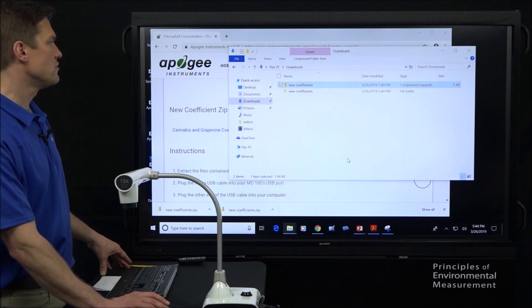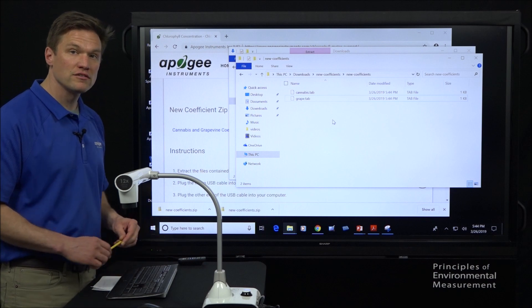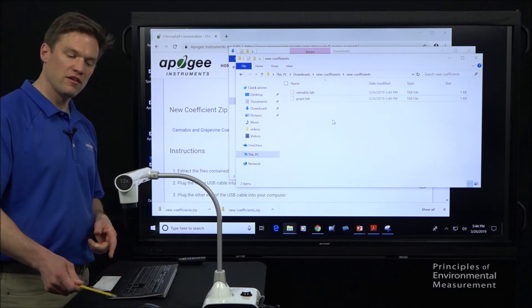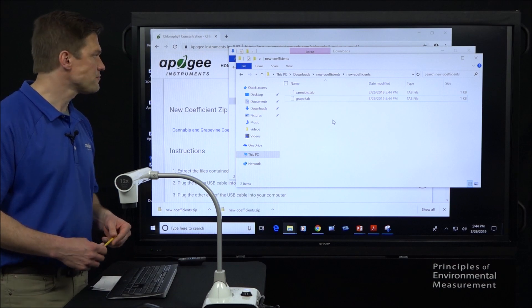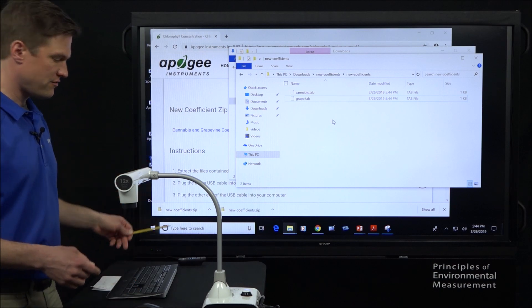Extract them because it's a zip folder so we extract them. Now, we can see we have two files in here. They're .tab files, some kind of encrypted file format that works well on the MC100 meter. And all we're going to do is we're going to connect this and drag these files over.